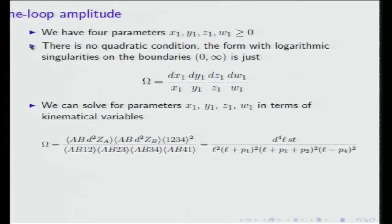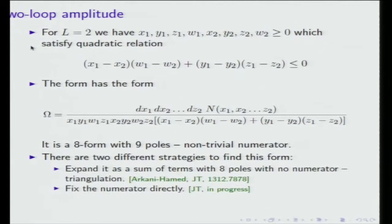For one loop the situation is trivial: we just have four positive variables and we look for a form with logarithmic singularities on boundaries — zero and infinity for all four variables — so the form is simply DX/X · DY/Y · DZ/Z · DW/W. Going back to kinematical variables, this gives the known formula for the zero-mass box capturing the one-loop amplitude. For two loops we have two sets of these variables with a single quadratic condition. The form must have eight poles corresponding to the eight variables, plus an extra quadratic pole, giving an eight-form with nine poles and a non-trivial numerator.